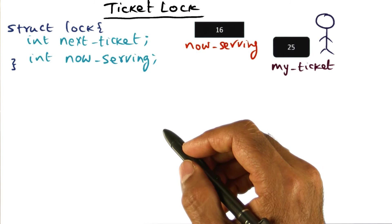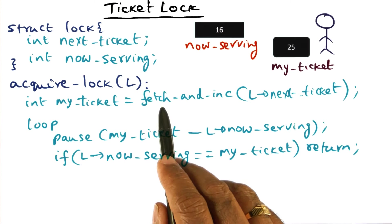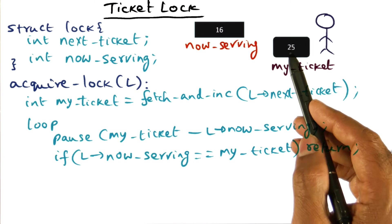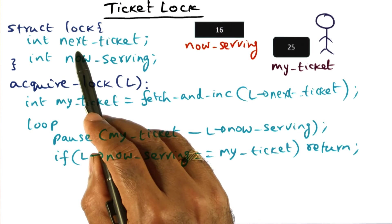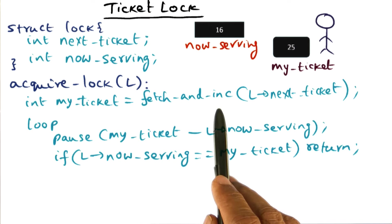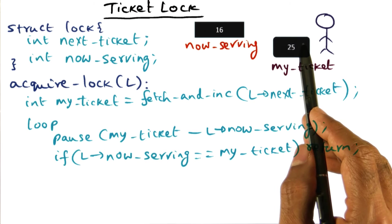And the lock algorithm, in order to acquire a lock, what I'm going to do is I'm going to mark my position. And the way I do that is I'm going to get a ticket, just like when I walk into a deli shop, I get a unique ticket. I get a unique ticket by doing a fetch and increment on the next ticket field of the lock data structure. And when I do this fetch and increment, I get a unique number, and this number is also advanced, exactly like how it would happen in a deli shop.